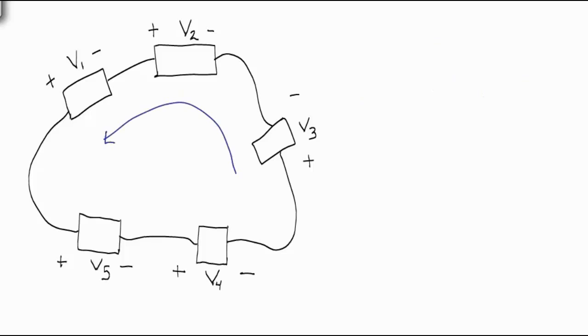If we go around the loop counterclockwise, we get a similar result. However, the voltage rises and drops switch. Starting at V3, we go from a positive to a negative, so that is a drop. V2 goes from a negative to a positive. It is a rise, as is V1. Continuing on, V5 and V4 are drops. The equation in the end is the same, so the results are equivalent.